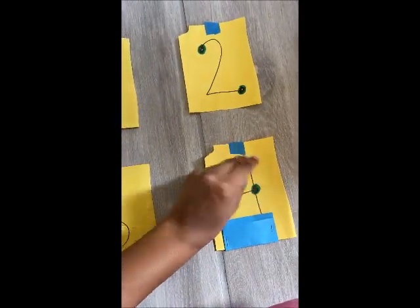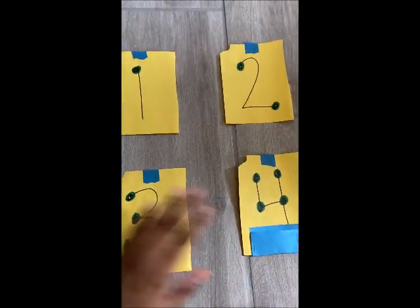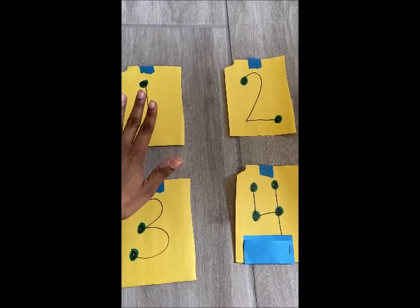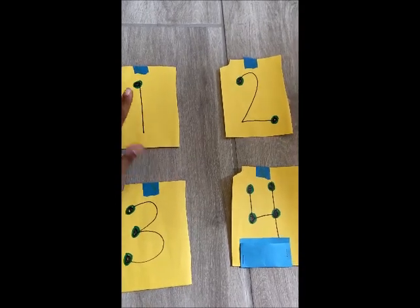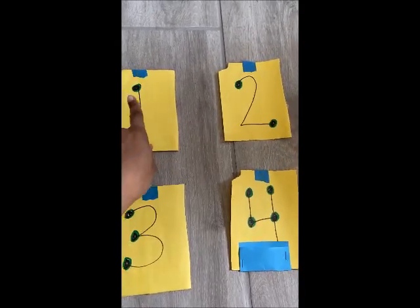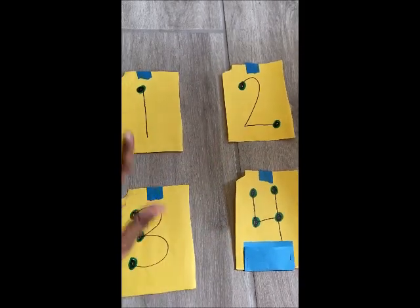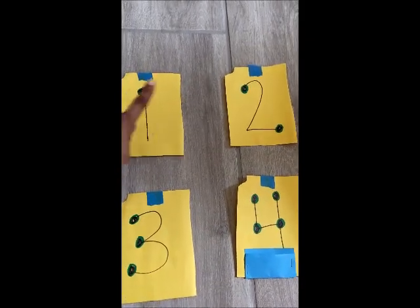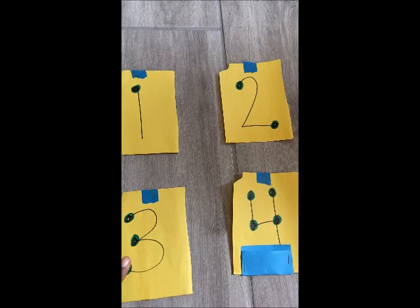So what she did was she did four cards and you can do more if you want, but she did four cards. She wrote one, two, three, four. And then for each one of the numbers, she put a dot on each one of the points in the number.